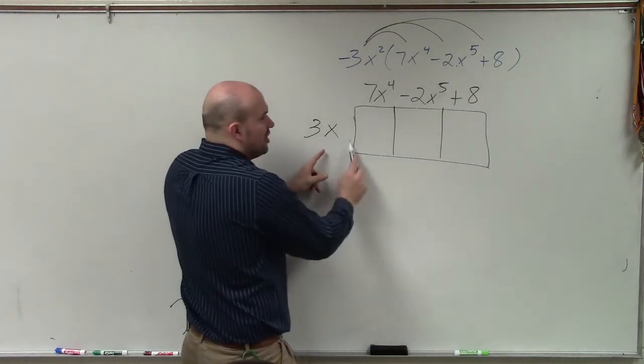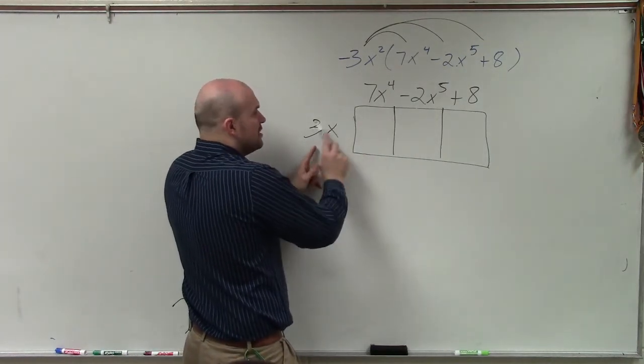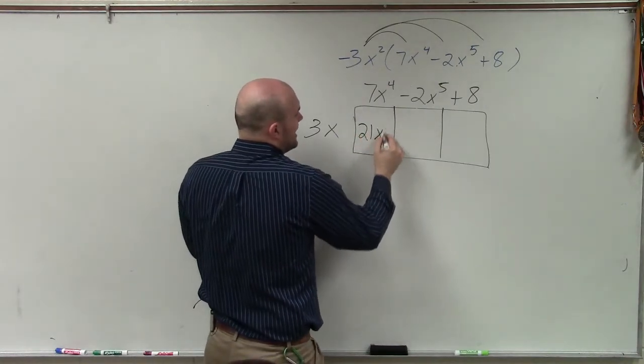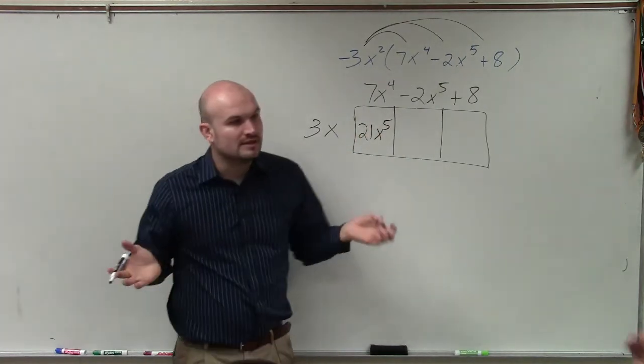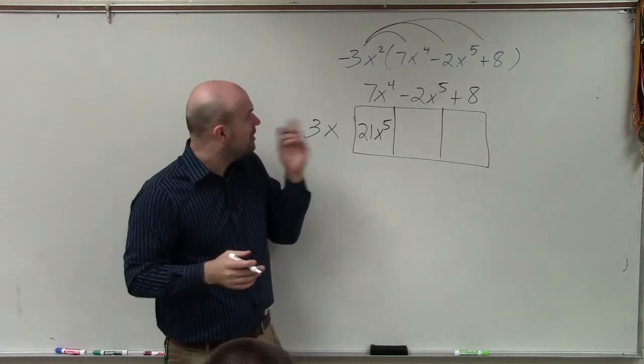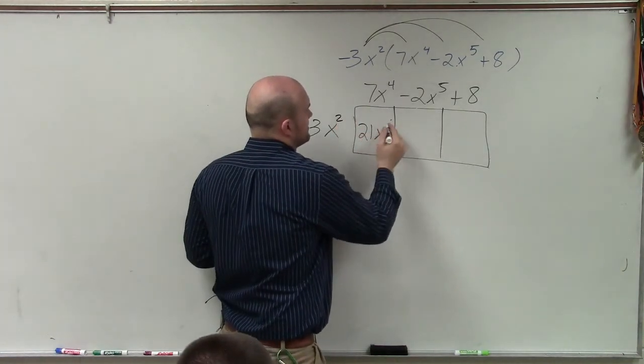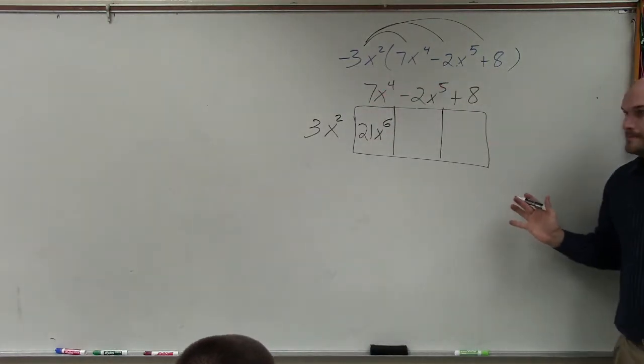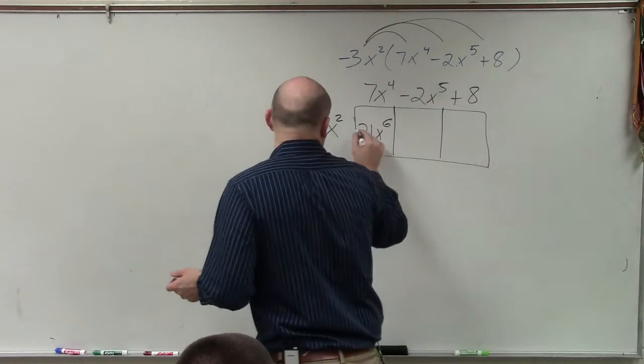Now, all I have to do is multiply the length times width of this box. 3x times 7x to the fourth is 21x to the fifth. Oh, it's 3x squared. So therefore, that's to the sixth. Good job, Brouwer. Right? Does everybody agree with me on that? Yes, and I agree with you on that. I forgot to write that down, too.